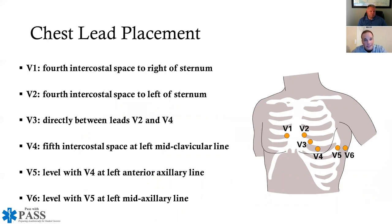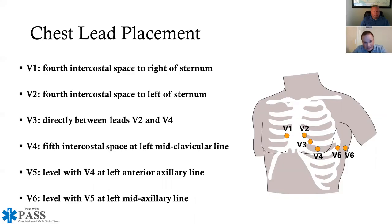For chest lead placement — also called precordial leads — V1 goes to the fourth intercostal space to the right of the sternum, V2 at the fourth intercostal space to the left of the sternum. V4 is placed at the fifth intercostal space at the left mid-clavicular line, with V3 placed directly between V2 and V4. V5 is at the left anterior axillary line and V6 at the mid-axillary line, both on the same plane as V4.